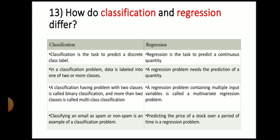A classification problem with two classes is called binary classification, and more than two classes is called multi-class classification. A regression problem containing multiple input variables is called multivariate regression problem. Classifying an email as spam or not spam is an example of classification problem. Predicting the price of stock over a period of time is a regression problem.